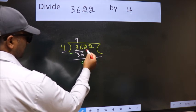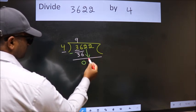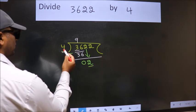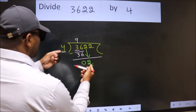After this, bring down the next number, so 2 comes down. Now here we have 2, here 4. 2 is smaller than 4.